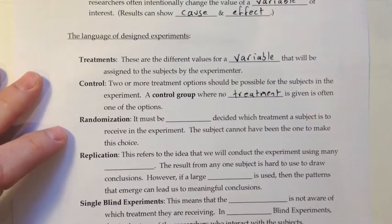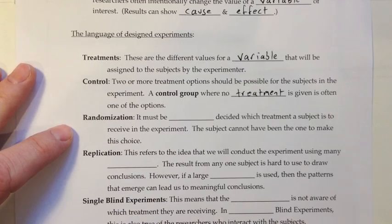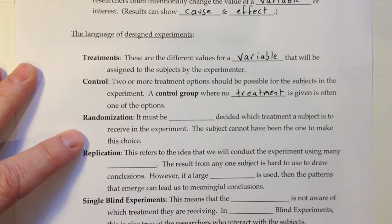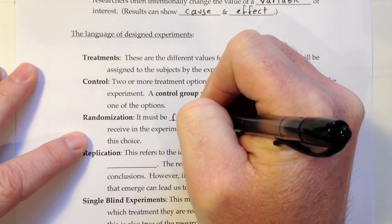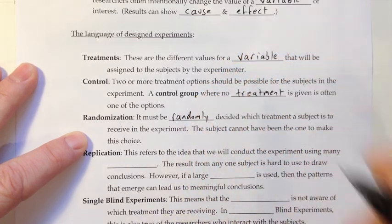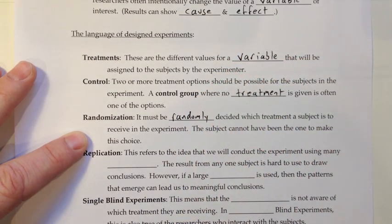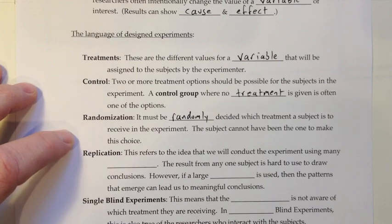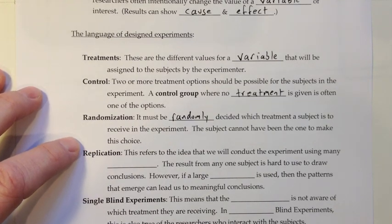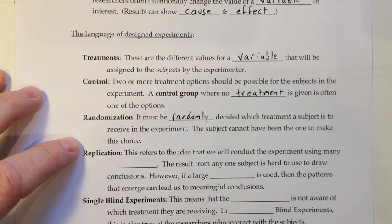A critical element of a designed experiment is randomization. It must be randomly decided which treatment a subject is to receive. The subject cannot be the one to make the choice — we randomly choose for a participant whether they get the real treatment or the placebo. They don't get to choose that for themselves.